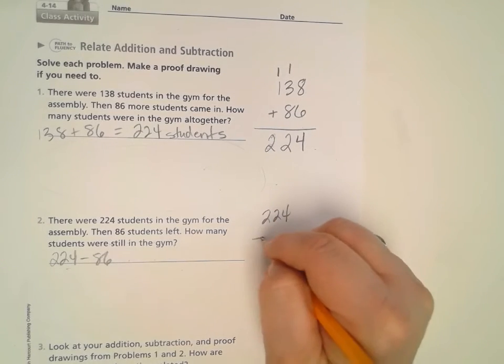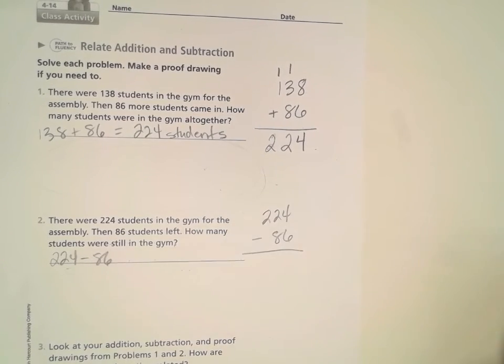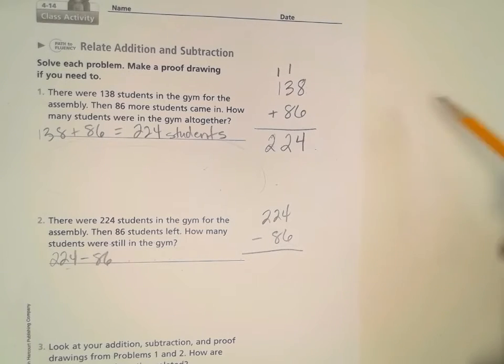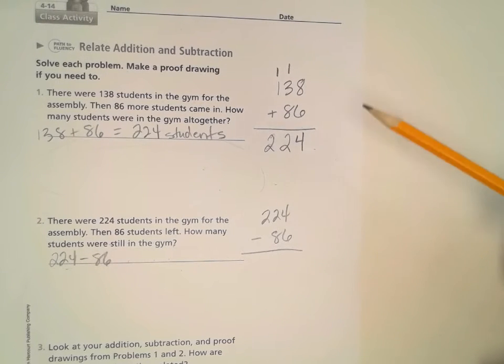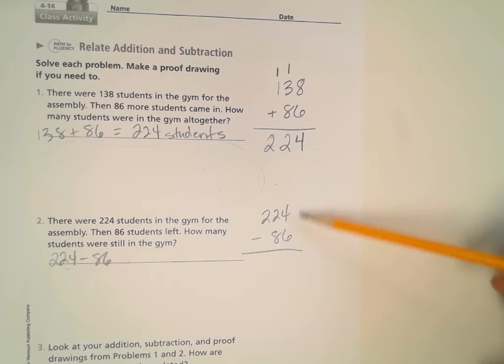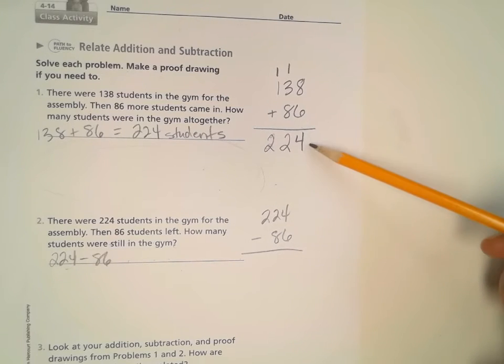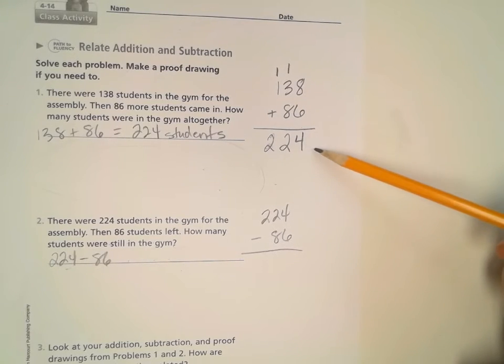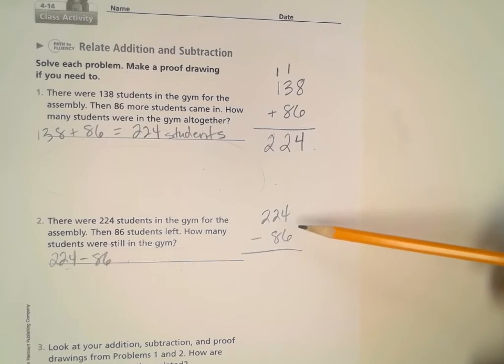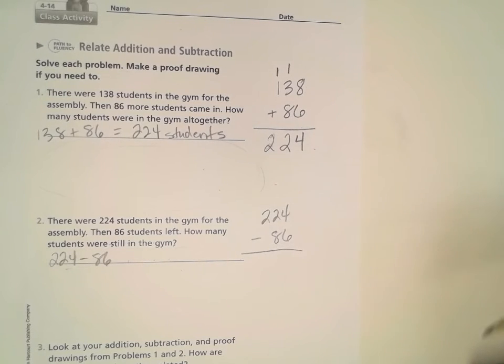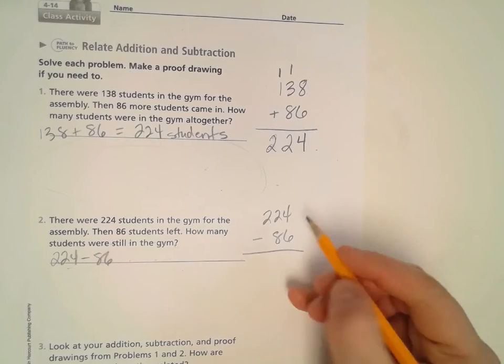224 minus 86. Does anybody notice anything about this problem and this problem? And my idea about addition and subtraction being related. You might notice that these numbers seem to be in common. These two numbers added up to this one. So now this one is subtracting this one. Might give you a hint about what answer we should end up with. All right, well let's try it out.